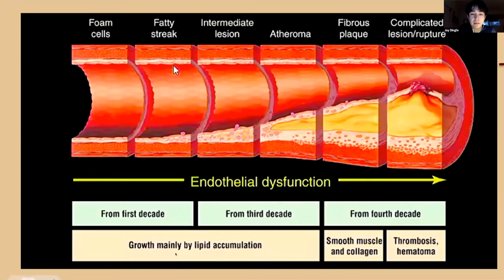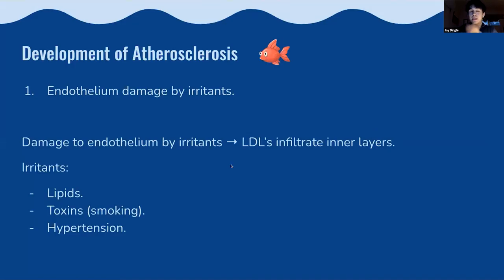Around the fourth decade is when you start to see complications — thrombosis, hematoma, and rupture. There are six key steps in the development of atherosclerosis. The first is endothelium damage done by irritants: low-density lipoproteins infiltrate the inner layers of the artery causing damage. Possible irritants include lipids, toxins from smoking, and hypertension.